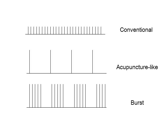These three modes of TENS are depicted here: high frequency, low intensity conventional TENS; low frequency, high intensity acupuncture-like TENS; and low frequency bursts of high frequency, high intensity current, or burst TENS.